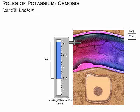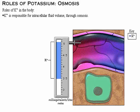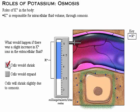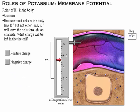As the major intracellular positive ion, potassium is responsible for intracellular fluid volume through osmosis. If there is a slight increase in potassium ions in the extracellular fluid, cells will shrink slightly due to osmosis. Because most cells in the body leak potassium but not other ions, potassium will leave the cells through ion channels, and a significant amount of positive charge leaves the cell.